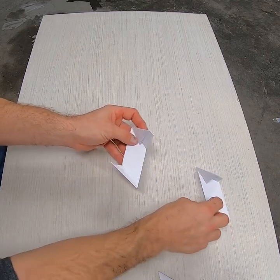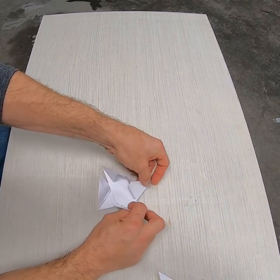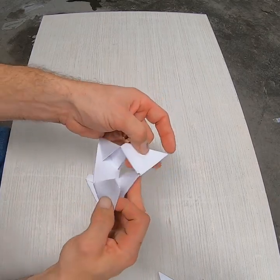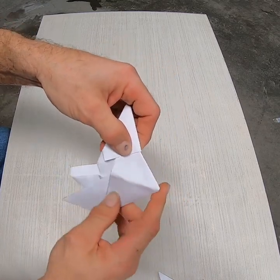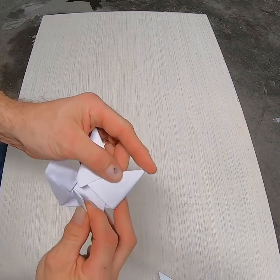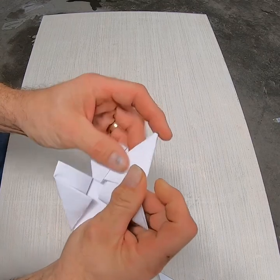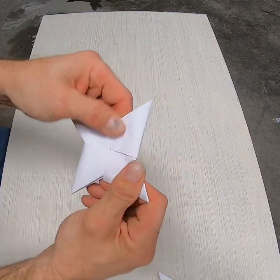The last thing we want to do is they're going to open like this by themselves, we're going to interlace them. So this little pocket right here, I'm going to take the triangle from the other one, I'm going to tuck it in that pocket like so. So this one, I'm going to tuck into this pocket, and the last one tucks into that pocket.